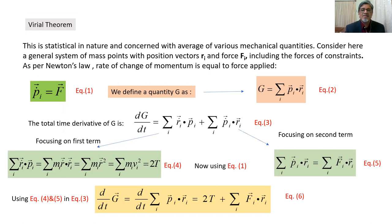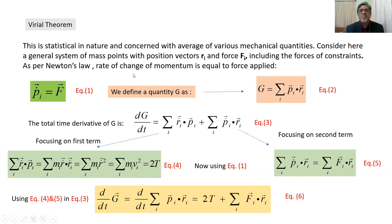We are going to derive the Virial Theorem very simply. It is statistical in nature and concerned with the average of various mechanical quantities. Consider a general system of mass points with position vectors Ri and force Fi, including the forces of constraint. As per Newton's law, the rate of change of momentum is equal to the applied force, so equation number one shows that P-dot-i is equal to Fi.